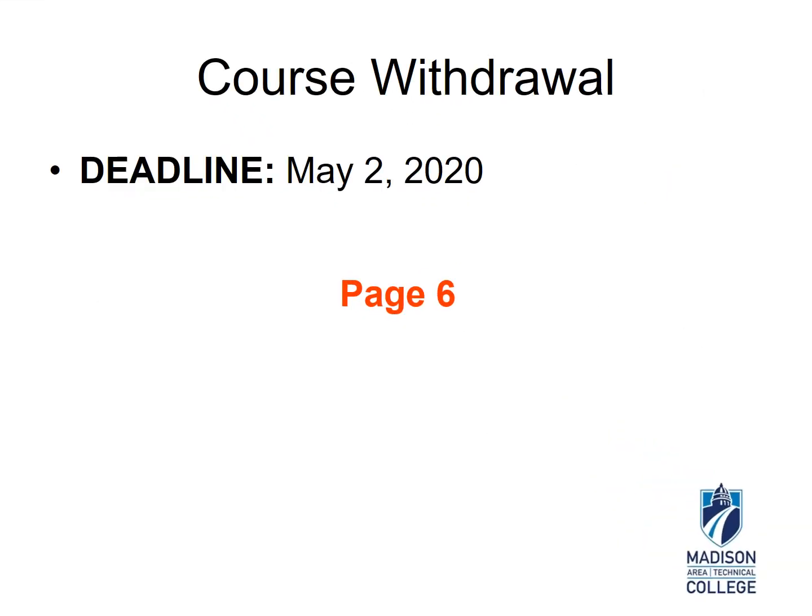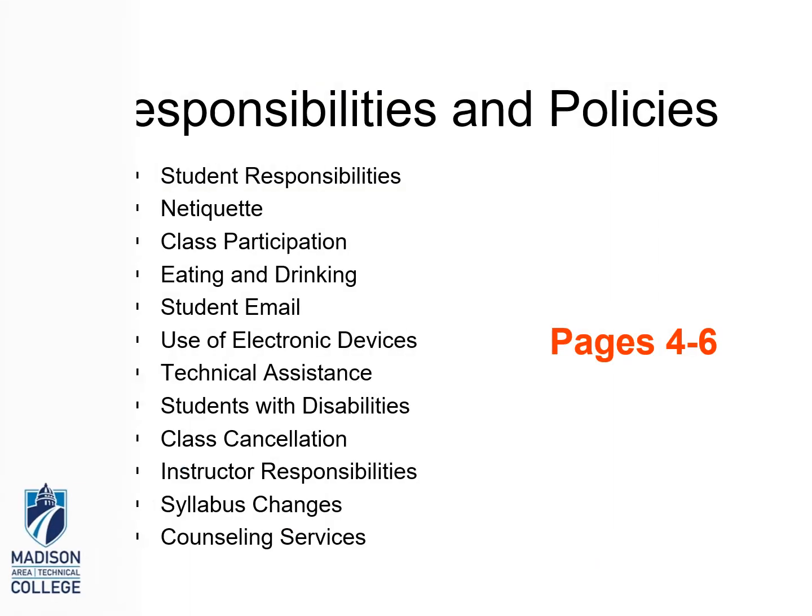The last day you may withdraw from the course is May 2nd. After this date, a withdrawal is not possible and you will receive a grade for the course. It is very important that you evaluate your standing prior to this deadline. I encourage any student considering withdrawing to meet with an academic advisor, especially if you receive financial aid. Please note that I do not have the power to withdraw you from the course — you must do this yourself before May 2nd. I encourage you to read the responsibilities and policies listed on pages 4 through 6, as you will be held responsible for adhering to them.